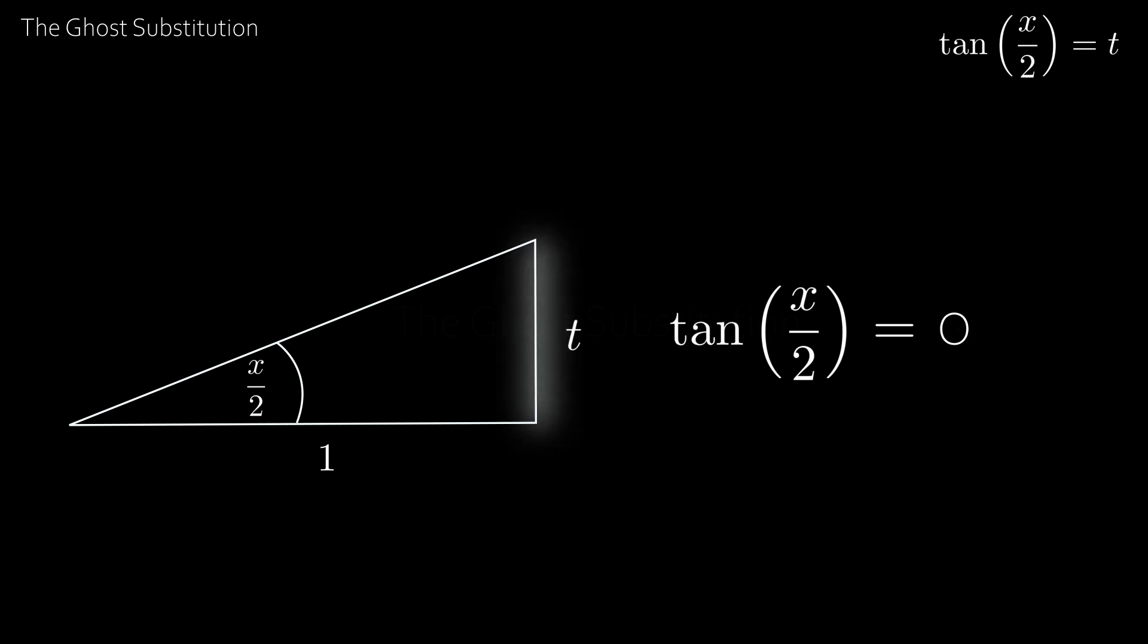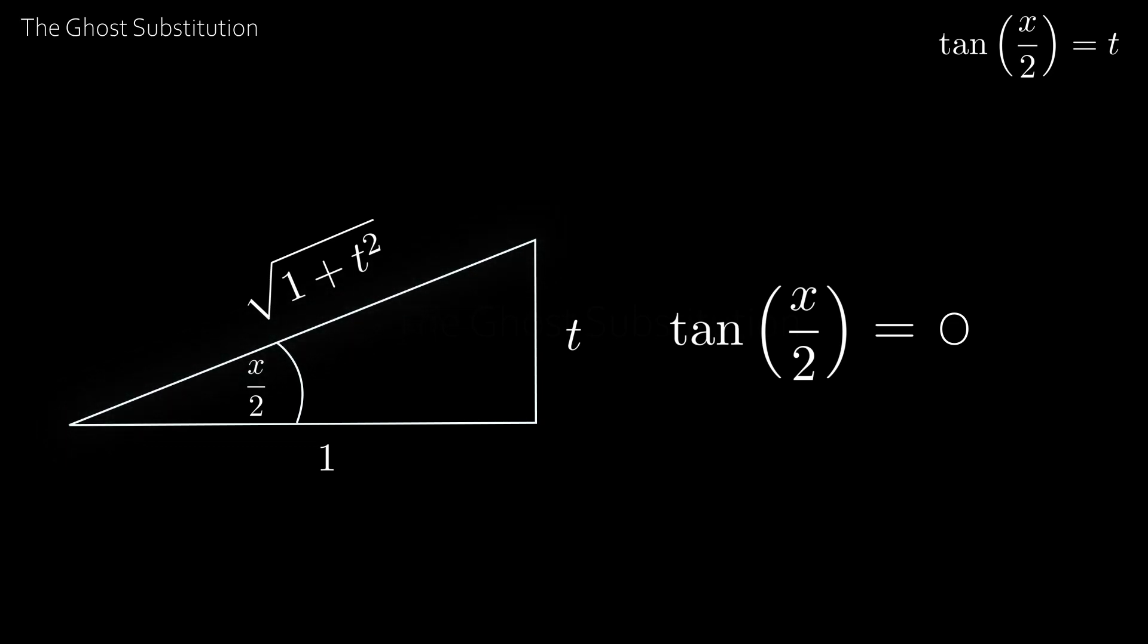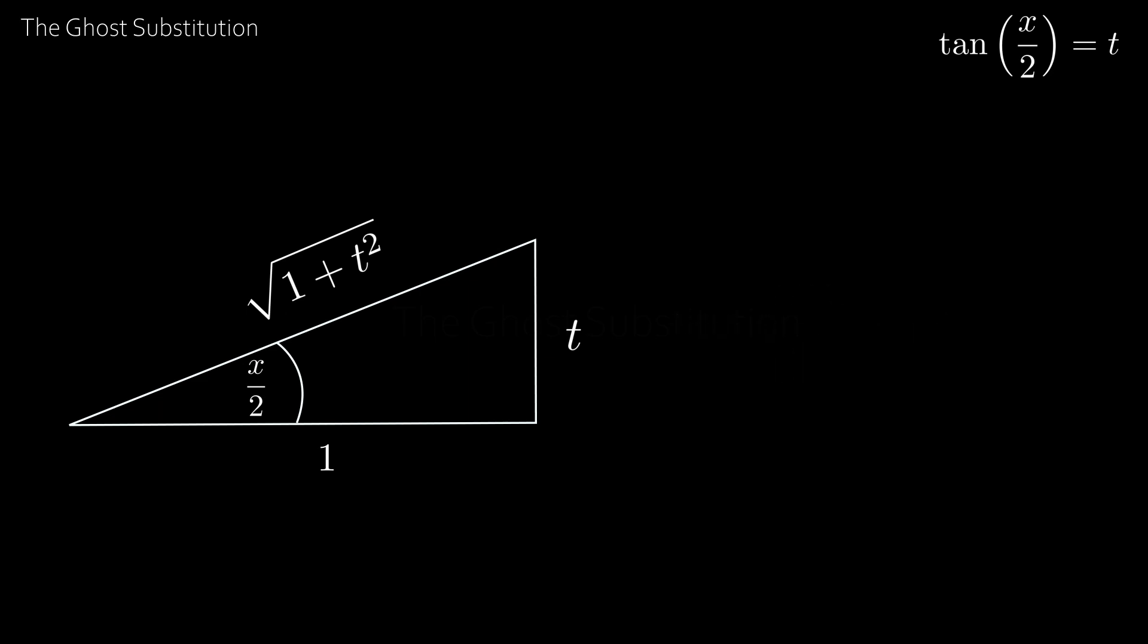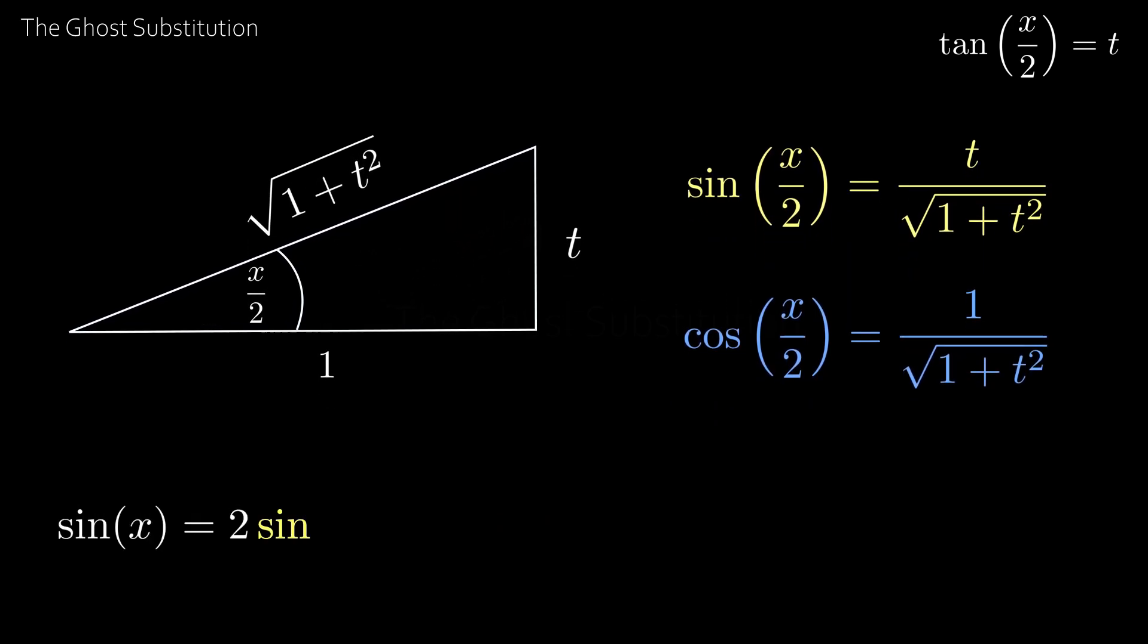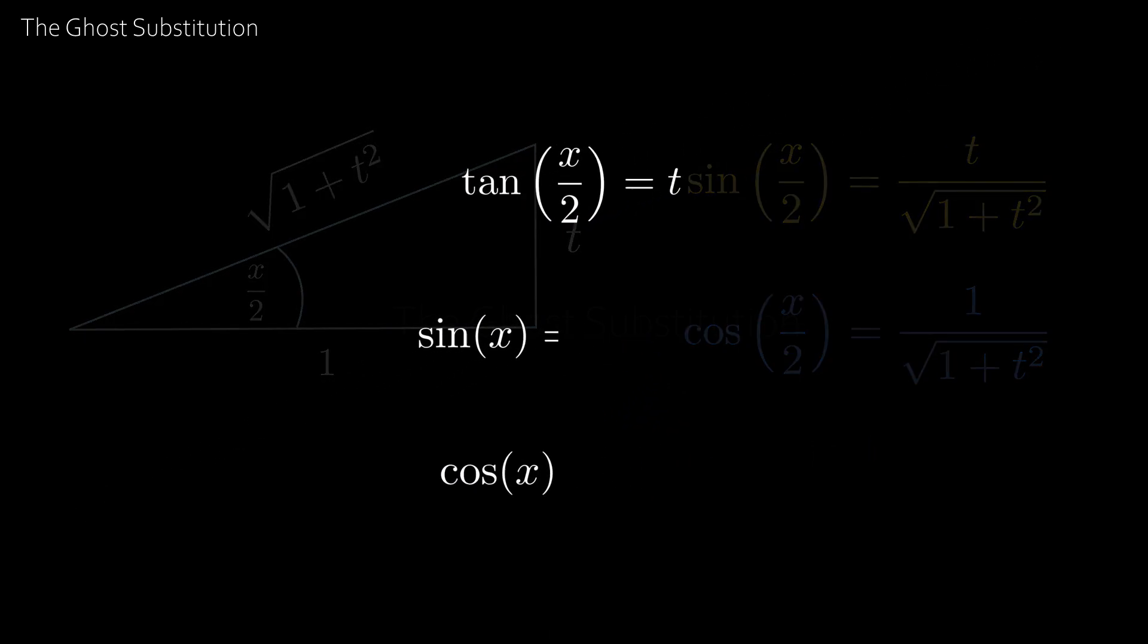Then via the Pythagorean theorem, the hypotenuse becomes the square root of 1 plus t squared. And since we have all the sides of the triangle, we can find sine of x over 2 and cosine of x over 2 in terms of t. And then using the double-angle formulae, we get formulas for sine x and cosine x.